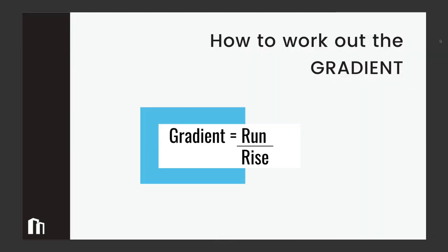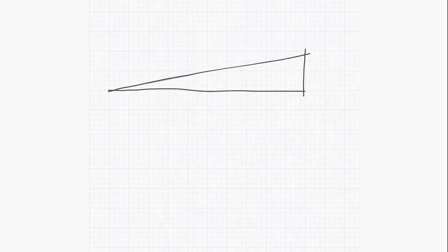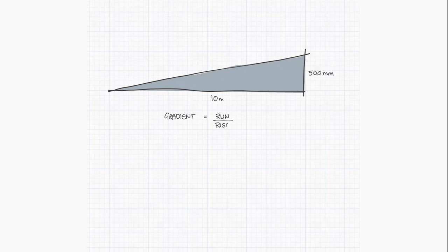So first things first, how to work out the gradient. So here we have our slope. We know that the run is 10 meters and we know that the rise of this slope is 500 millimeters. Gradient is equal to the run divided by the rise. So in this case the gradient is equal to 10 meters divided by 500 millimeters. Now we need to correct our units so we are looking at 10,000 millimeters over 500 millimeters. This comes to 20 so we know that the gradient is 1 in 20.